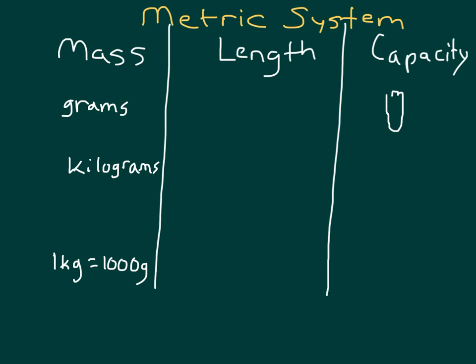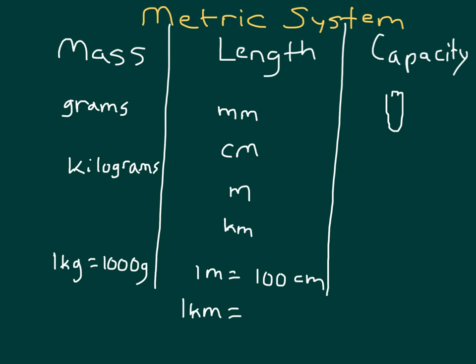When we're talking about the length of something, the units in the metric system include millimeters — one of the smallest — and also centimeters. Even larger than a centimeter we have a meter, and even larger than that we have kilometers. One meter equals 100 centimeters, and one kilometer equals 1,000 meters.